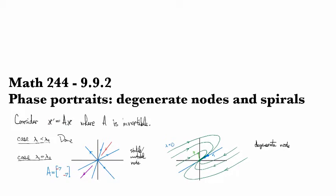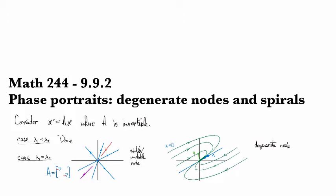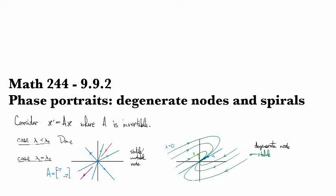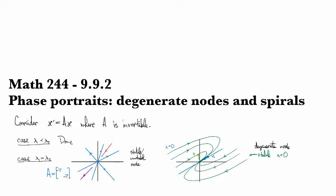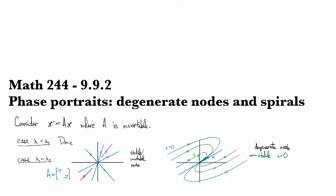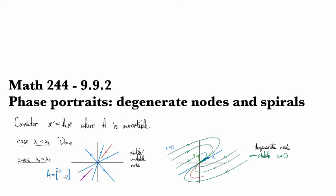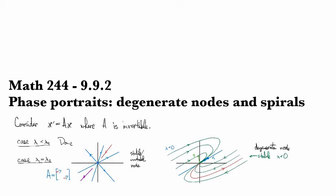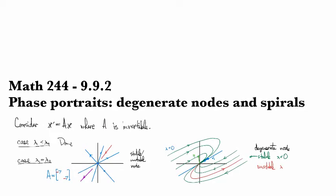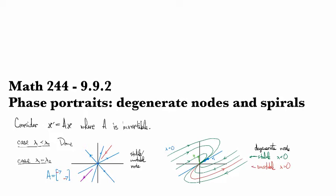And so this is called a degenerate node. And this would be an example of a stable one with our repeated eigenvalue being negative. Of course, if it were reversed with it being positive, then that would be unstable. That would be the case when lambda is positive.